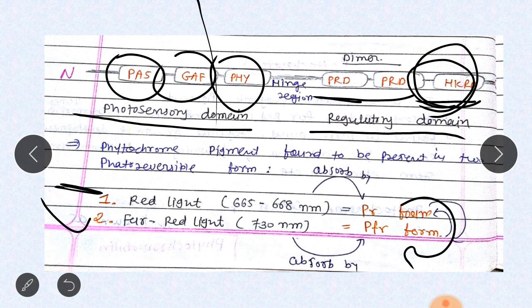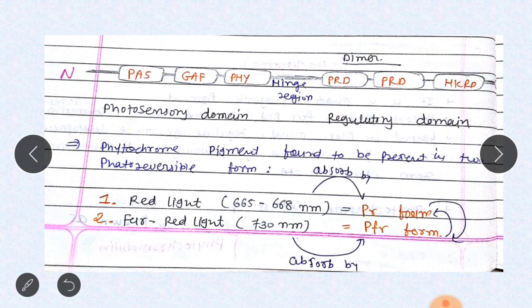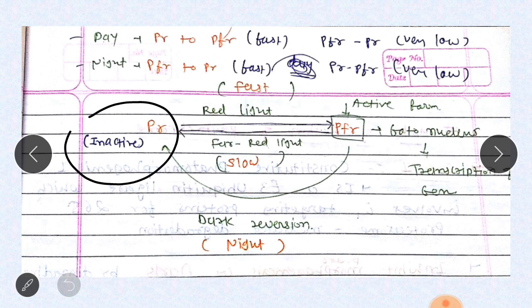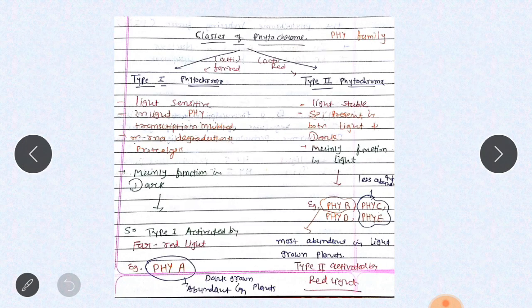Red light is absorbed by Pr form and this Pr is converted into Pfr, which is the activated form of phytochrome. Far-red light, which is inhibitory, is received by Pfr and converts it back into Pr. The Pr form is the inactivated form — it absorbs red light, becomes active, and initiates photomorphogenesis by entering the nucleus and binding with DNA. Pfr is the active form, but upon receiving far-red light, it converts back to Pr, which is high at night and low in daytime.